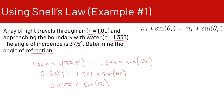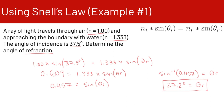To get rid of the sine on the right side, we use the inverse sine — sometimes called the arc sine. Taking the inverse sine of 0.457 gives us theta r. The inverse sine gives us an angle of 27.2 degrees, and that is our angle of refraction.